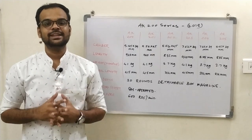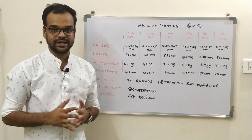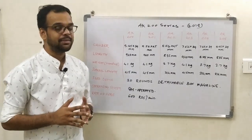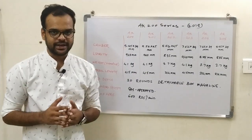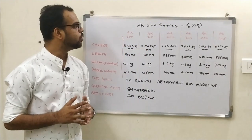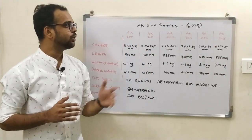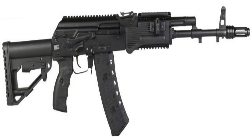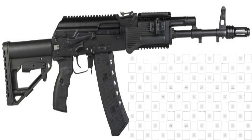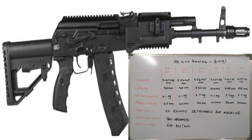The seventh weapon is the AK-200 series, which came into operation in 2018. It includes the variants AK-200, AK-201, AK-202, AK-203, AK-204, and AK-205. All variants in this series share a 30-round detachable box magazine, are gas-operated, and can fire 600 rounds per minute.